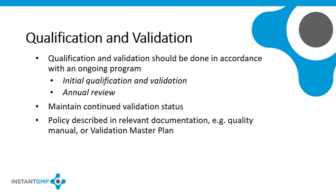Qualification and validation should be done in accordance with an ongoing program. Initial qualification and validation normally requires DQ, IQ, OQ, and PQ. There should then be an evaluation or review annually to determine whether validation or qualification is required again. This is to ensure that the company maintains a continued validation status. The company policy on validation should be described in relevant documentation such as the quality manual or the Validation Master Plan.